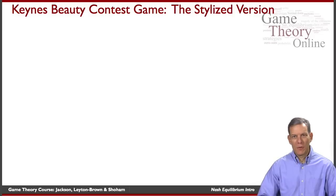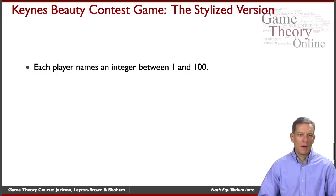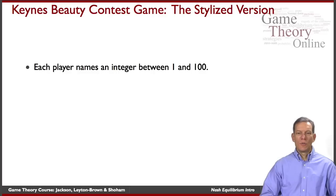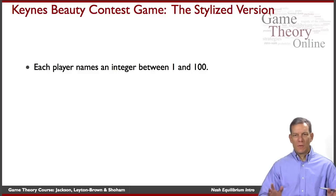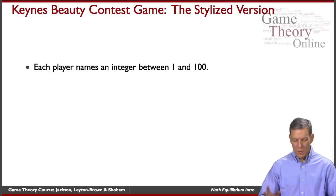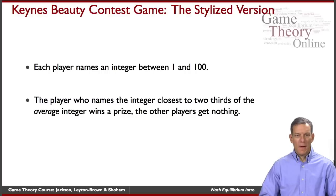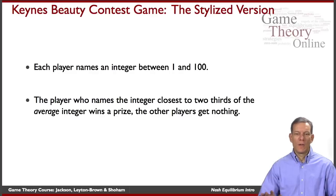This is now represented by a very simple game that is played by many people. Each person gets to name an integer between 1 and 100. Players move simultaneously, and the player who names the integer closest to two-thirds of the average integer wins a prize. The other players get nothing. If two people tie on the same correct integer, ties are broken uniformly at random.